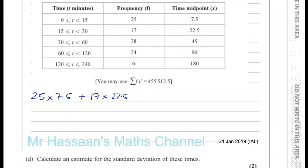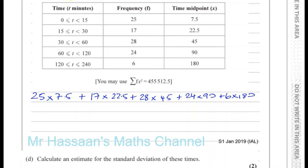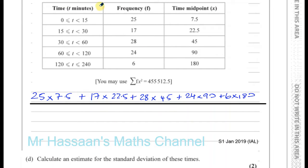Plus 28 times 45, plus 24 times 90, plus 6 times 180. We take all of that and divide by the total number of people, which is 100. That should give us our answer. Let's use a calculator.